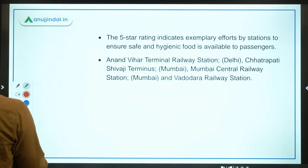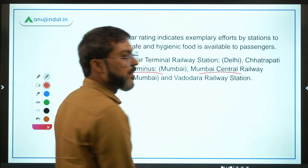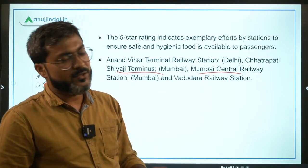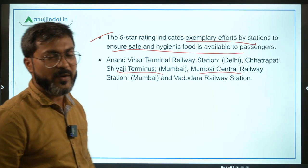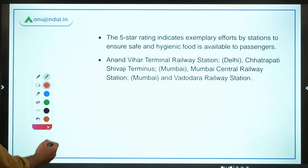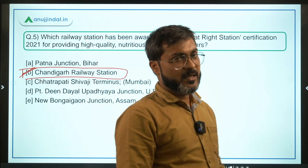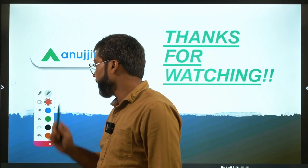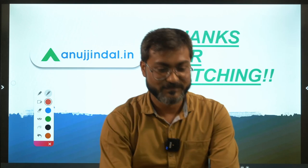Chandigarh is the fifth railway station to receive the Eat Right Station certification. The other four are: Anand Vihar, Chhatrapati Shivaji Terminus Mumbai, Mumbai Central, and Vadodara Railway Station from Gujarat. This certification indicates exemplary efforts by these stations to provide hygienic and nutritious food to passengers. The correct answer is Chandigarh Railway Station, option B. That's it for today's session — thank you for watching, goodbye, and take care.